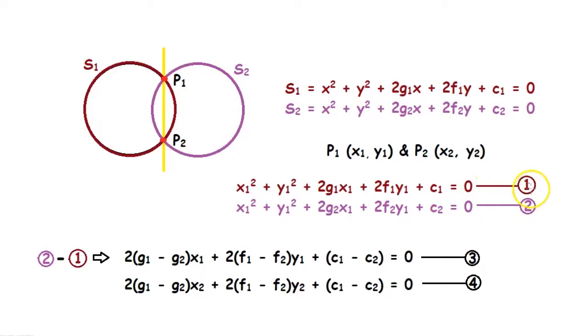This will be equation 1. When we substitute P1 into the formula of S2 because it lies on S2 as well, we get x₁² + y₁² + 2g₂x₁ + 2f₂y₁ + c₂ = 0. We can call this equation 2. When we subtract equation 1 from equation 2,